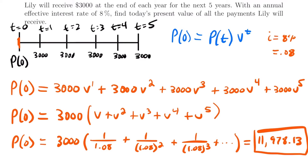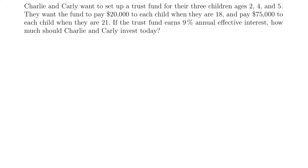That is the amount Lily would have to deposit today to receive these $3,000 payments each year for the next five years. Now let's move on to our final and most complex example. Charlie and Carly want to set up a trust fund for their three children, ages 2, 4, and 5. They want the fund to pay $20,000 to each child when they turn 18 and $75,000 when they turn 21. The trust fund earns 9% annual effective interest, which is a compounded annual rate, so the interest rate is 0.09.